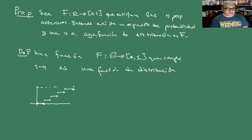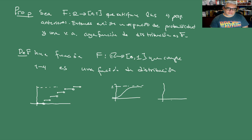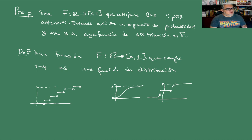Una función que valga exactamente 1 en el extremo es una distribución. Una función sigmoide que se apachurra en el 1 también es una distribución. Una que valga 0, luego crece un poquito, tiene un salto, y luego se apachurra hacia el 1 es también una distribución. De cuál variable aleatoria corresponde, por el momento no sabemos; simplemente sabemos que existe.